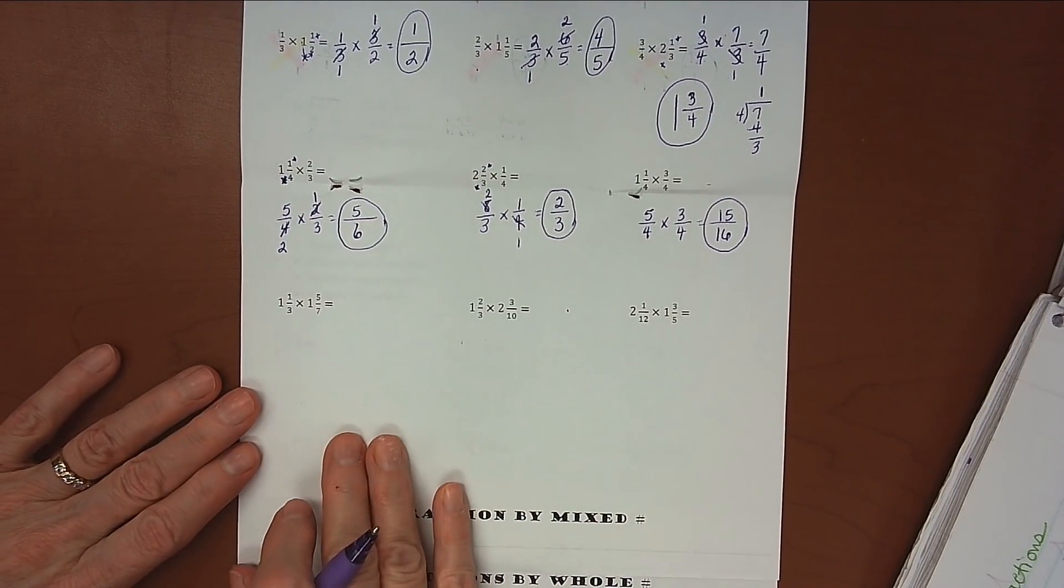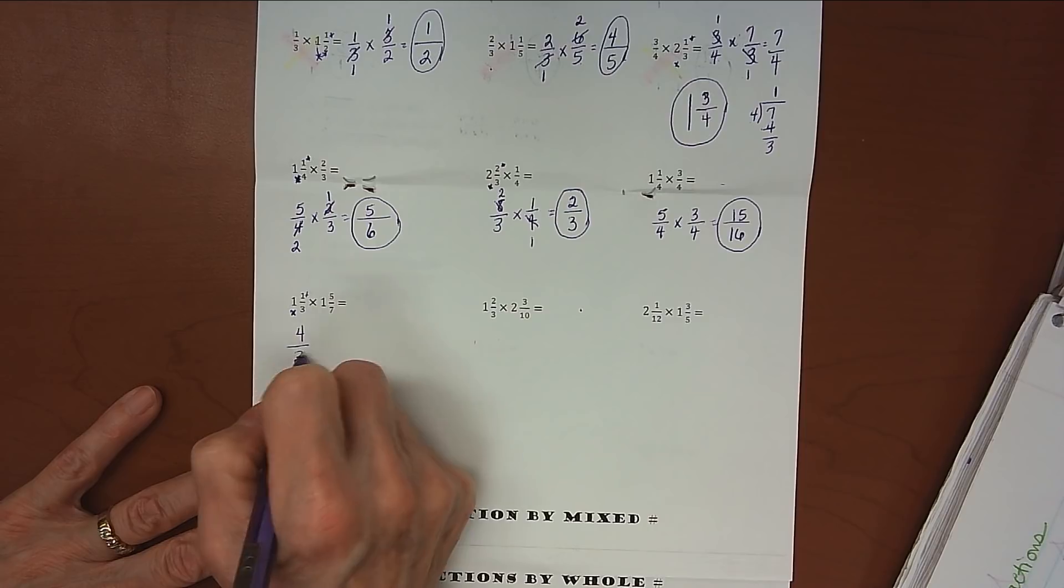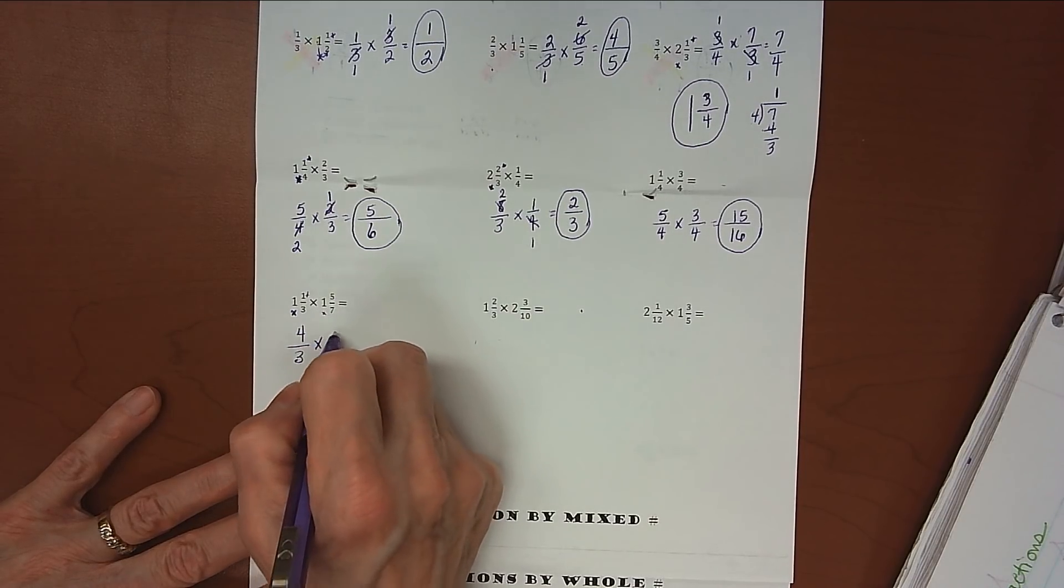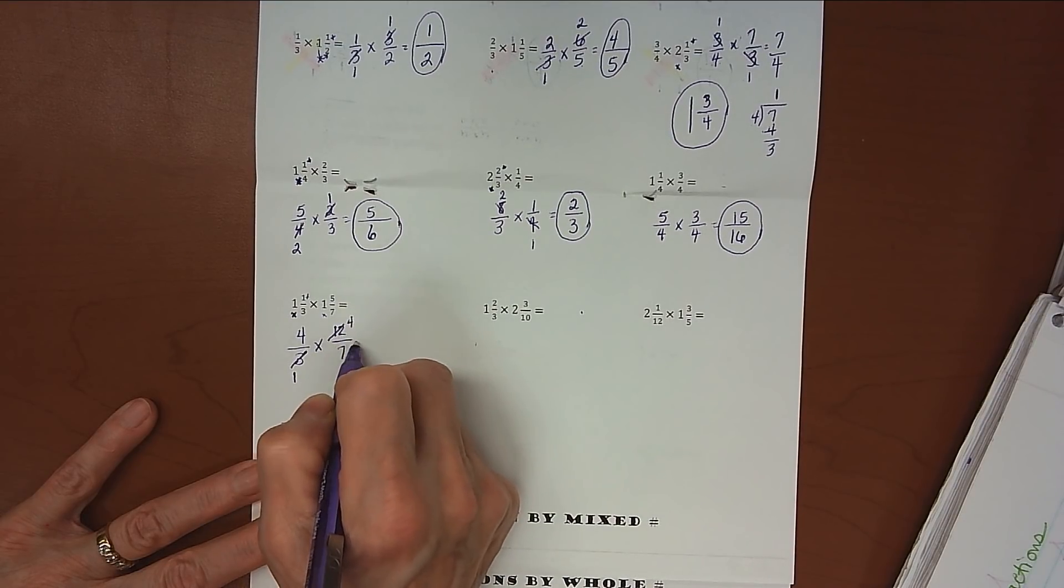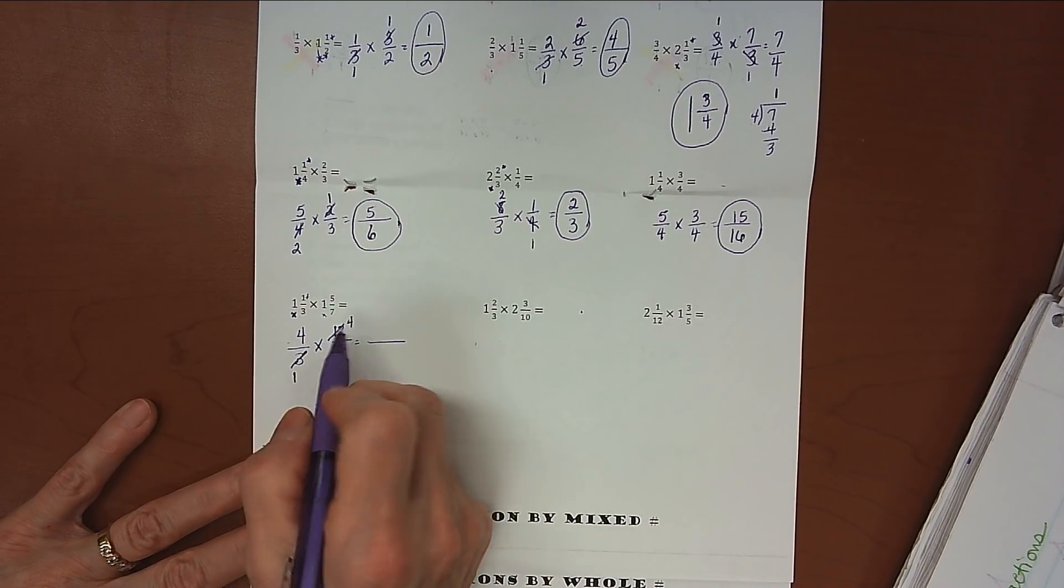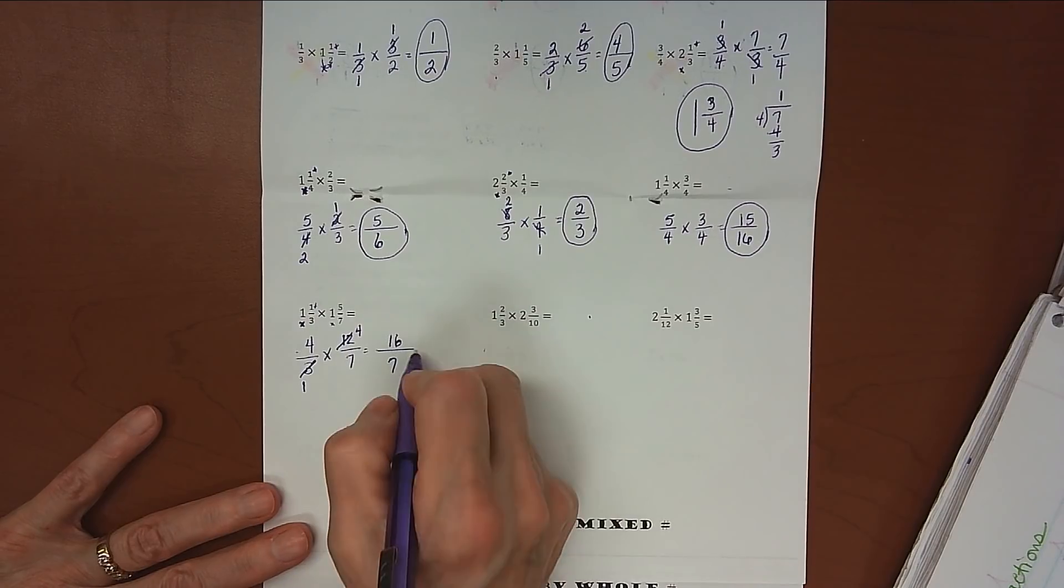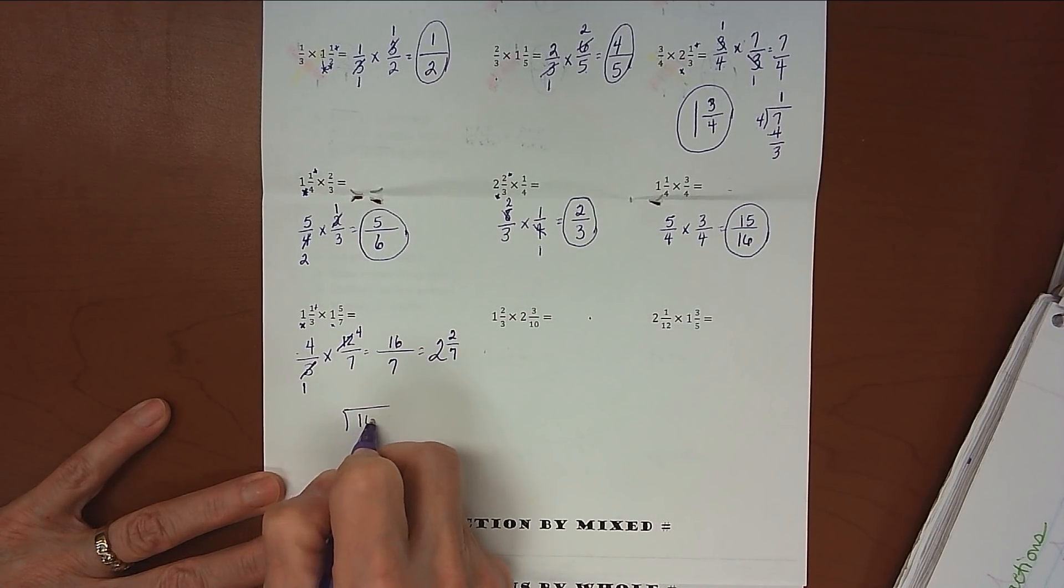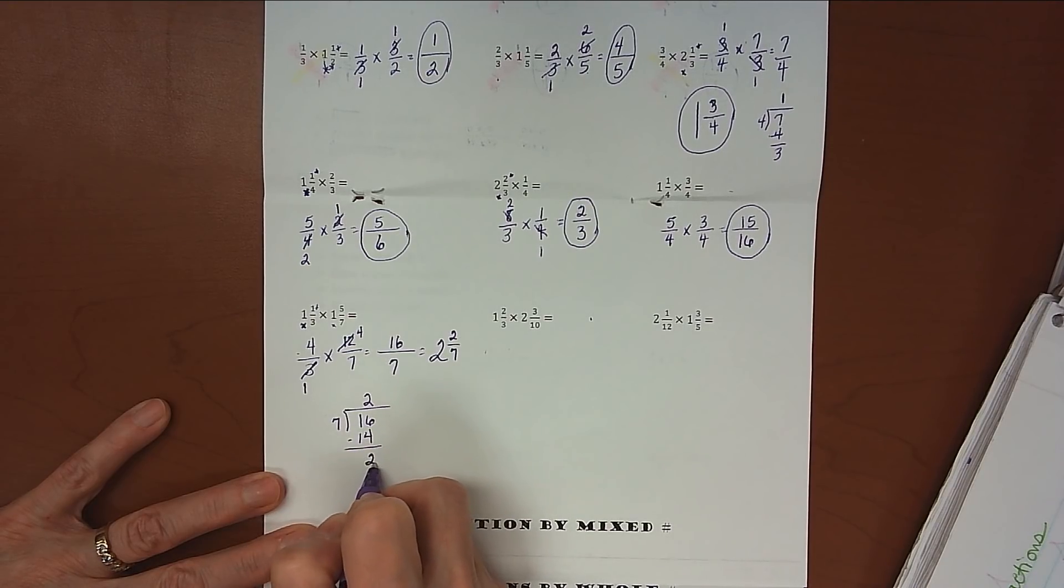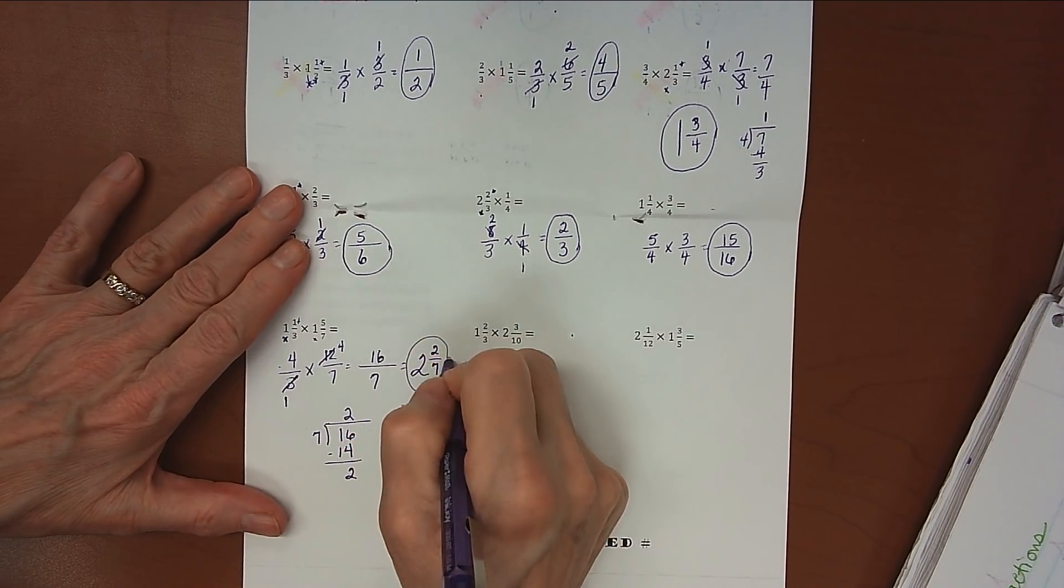Alright, now down here we've got two mixed numbers. No problem. I'm just going to change them both into improper fractions. So 1 times 3 is 3, plus 1 is 4, 4/3 times 1 times 7 is 7, plus 5 gives us 12, 12/7. Cross-simplify, 3 divides by 3 once, 12 divides by 3 four times. 4 and 7 can't be simplified. 4 times 4 is 16, 1 times 7 is 7. How many times will 7 divide into 16? Well, it'll go twice, because 7 times 2 is 14. That'll give us 2 left over, and the 7's my denominator. So that work would look like this: 16 divided by 7, 7 divides into 16 twice, 2 times 7 is 14, 16 minus 14 is 2. So there's my whole number, there's my leftovers, and there's my denominator. Alright, 2 and 2/7.